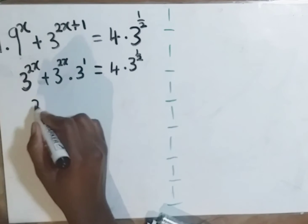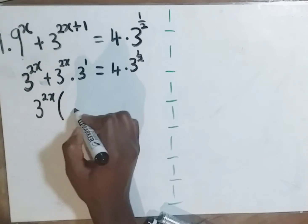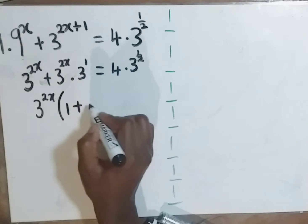This is going to be 3 to the power 2x open bracket. Here we remain with a 1 plus 3.